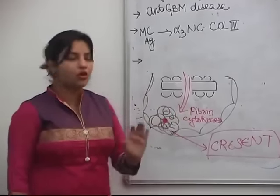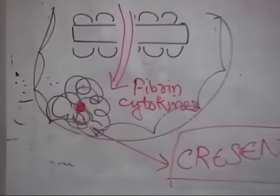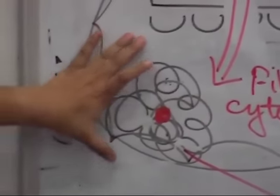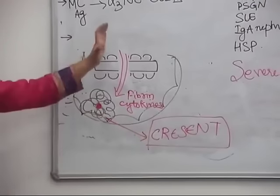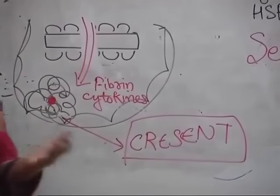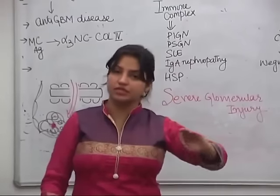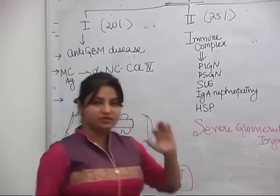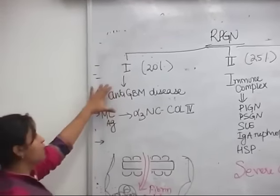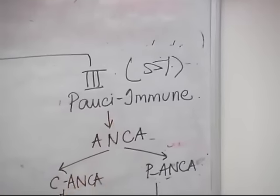A crescent is a proliferation of parietal epithelial cells along with neutrophils, lymphocytes, macrophages, with fibrin as the most important nidus. This is the hallmark lesion of RPGN, seen in all types. RPGN is classified into three types based on etiology: Type 1 (20%), Type 2 (25%), and Type 3 (55%). Type 1 RPGN is also known as anti-GBM disease.